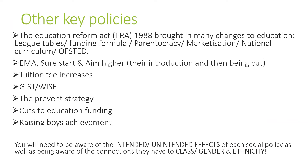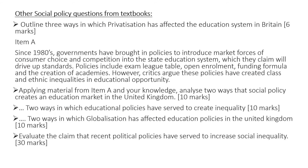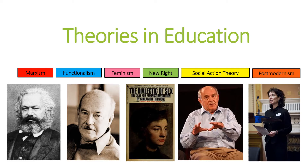Core policies always worth knowing include EMA, Sure Start, Aim Higher — all introduced under New Labour and subsequently cut when the Conservative–Lib Dem coalition came to power. Tuition fees increased under both New Labour and the Conservatives, with the Conservatives tripling them. Other key strategies include GIST, WIRES, Prevent, cuts to education funding, and raising boys' achievement initiatives.